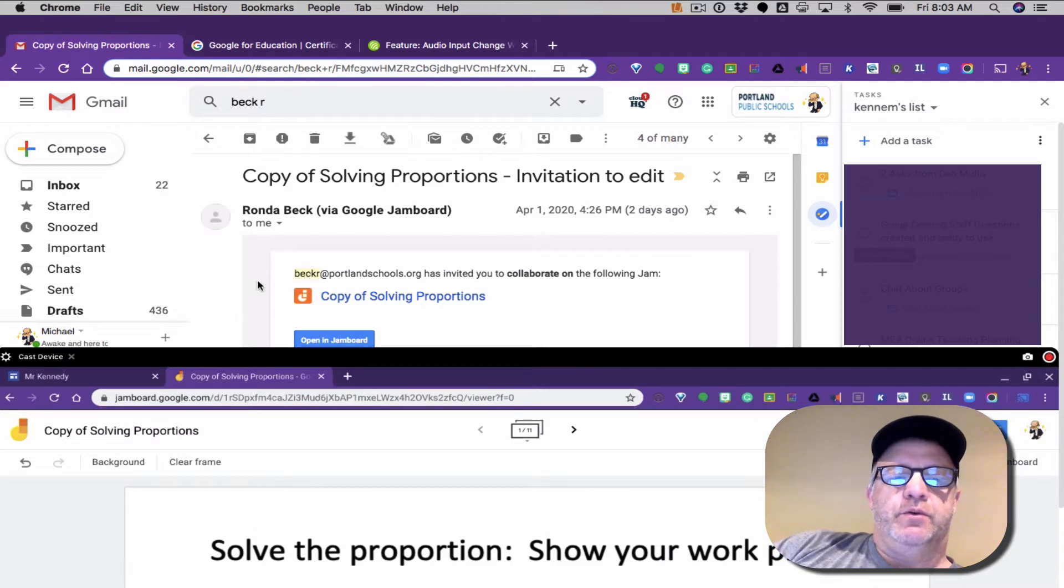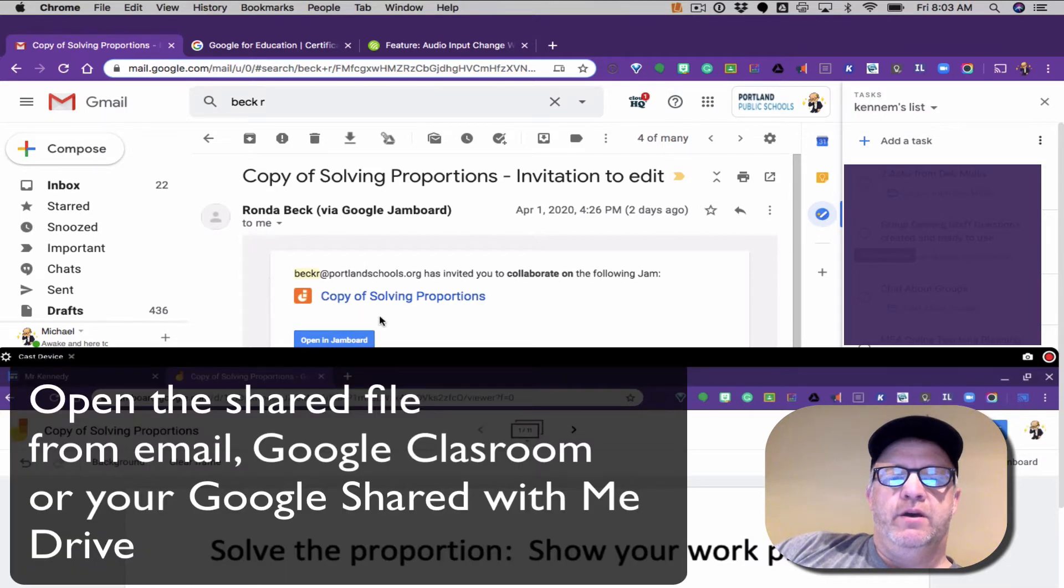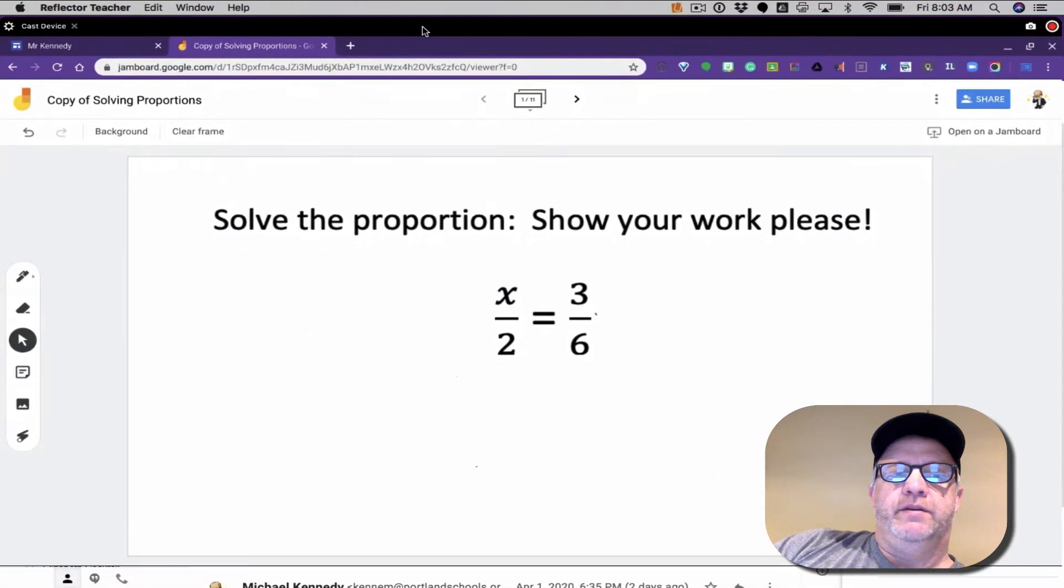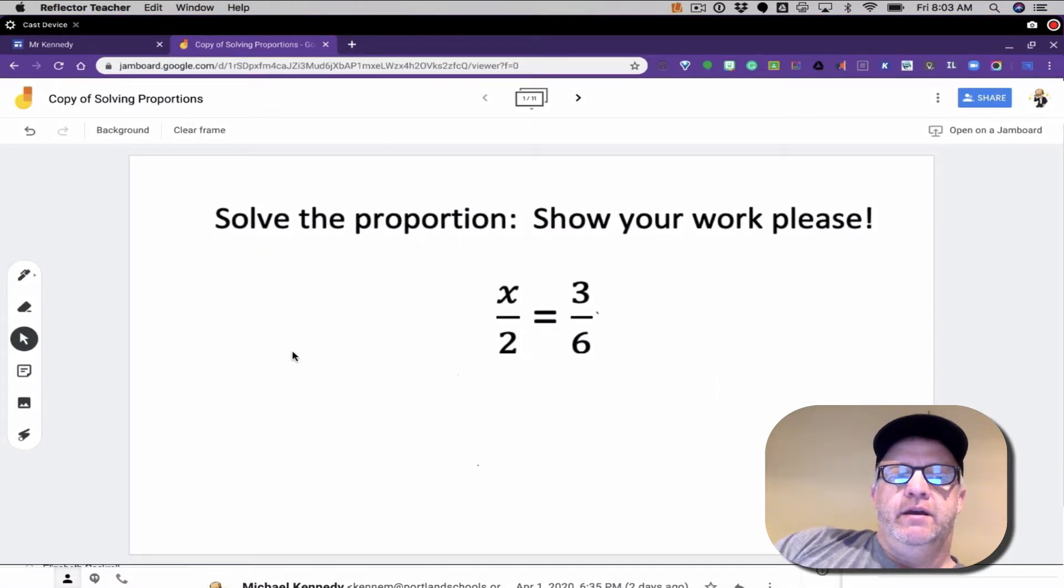First, we're going to open this email from Mrs. Beck. When we open that email, we'll get Jamboard, which looks like a D and is orange at the top. You'll see it says Copy of Problem Solving.